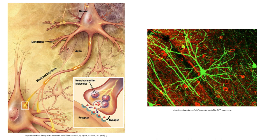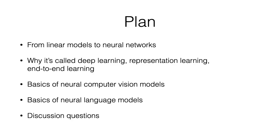Computer neural networks are mathematical models inspired by this biological idea. The plan is: I'll go over linear models, which are essentially the simplest form of neural network, then get into more complicated neural networks. There's a lot of jargon here — terminology that doesn't necessarily mean what it sounds like — so I'll try to explain all of that along the way.